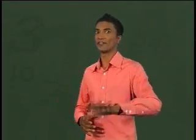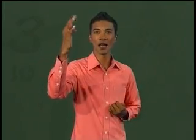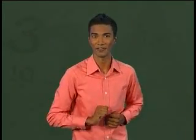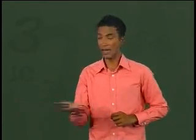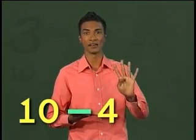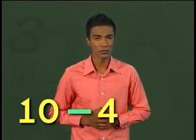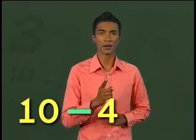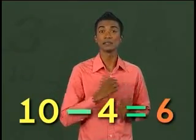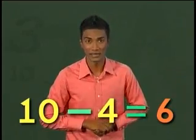If I have 10 pencils and I give 4 pencils to Zahid, how many pencils will I have left? Let's write the number sentence. I have 10 pencils and I give 4 to Zahid. That means 10 take away 4 equals 6. So, I have 6 pencils left.